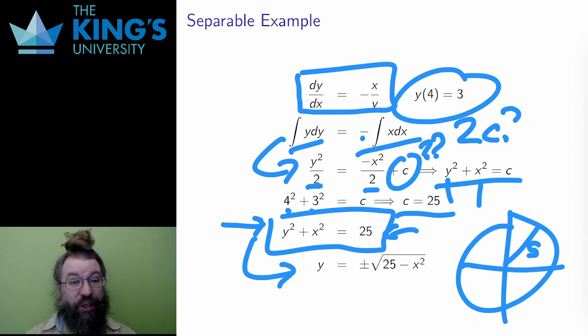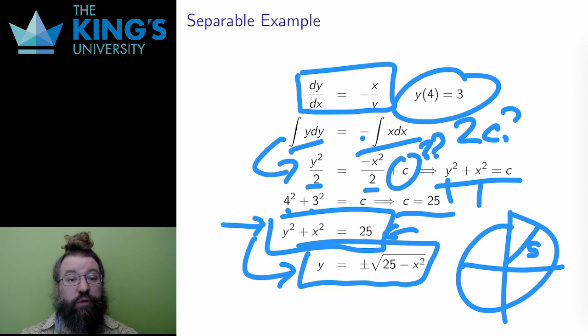I do still need to solve for y. The circle is not the graph of a function, after all. So I move x over and take the root. Again, I only need the positive root, not the negative root, since I know from the initial conditions that y is positive. The solution to this IVP is y = √(25 - x²).